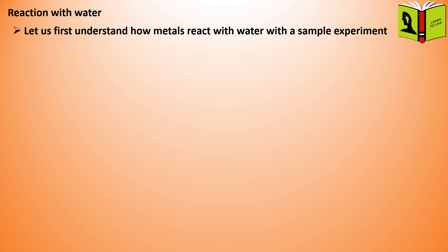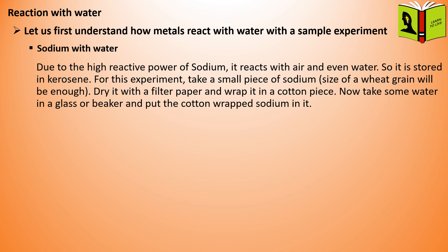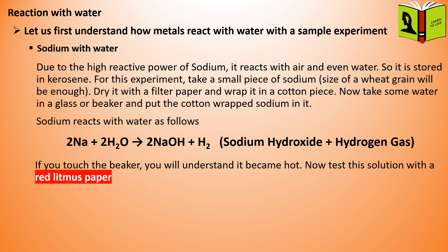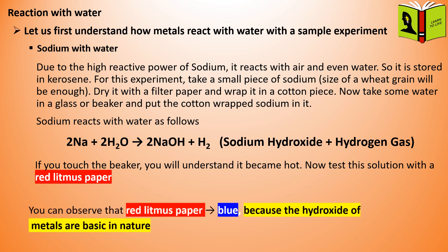The next chemical property is reaction with water. Let us first understand how metals react with water with a sample experiment — sodium with water. Due to the high reactive power of sodium, it reacts with air and even water, so it is stored in kerosene. For this experiment, take a small piece of sodium, dry it with a filter paper, and wrap it in a cotton piece. Now take some water in a beaker and put the cotton-wrapped sodium in it. Sodium reacts with water, and if you touch the beaker, you will understand it became hot. Now test this solution with a red litmus paper — you can observe that the red litmus paper turns blue, because the hydroxide of metals are basic in nature.